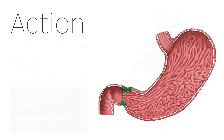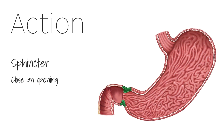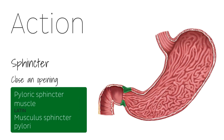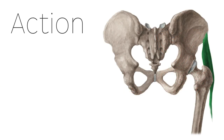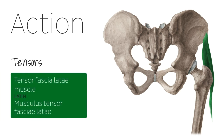The term sphincter is used for muscles that close an opening, for example the pyloric sphincter muscle. Finally, we have tensors, which describe muscles that tighten or make something rigid, like the tensor fasciae latae muscle, which sustains tension of the iliotibial tract.